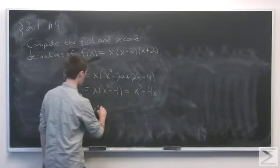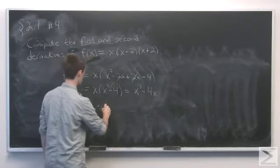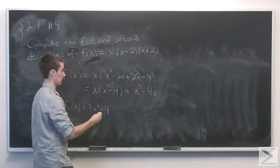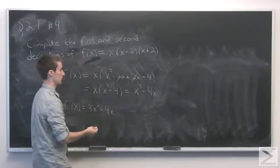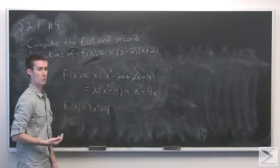So 3x² minus - here our exponent is 1, so we have 4 times x, and then lower the exponent by 1, so that's x⁰ or just 1. So we get f'(x) = 3x² - 4.